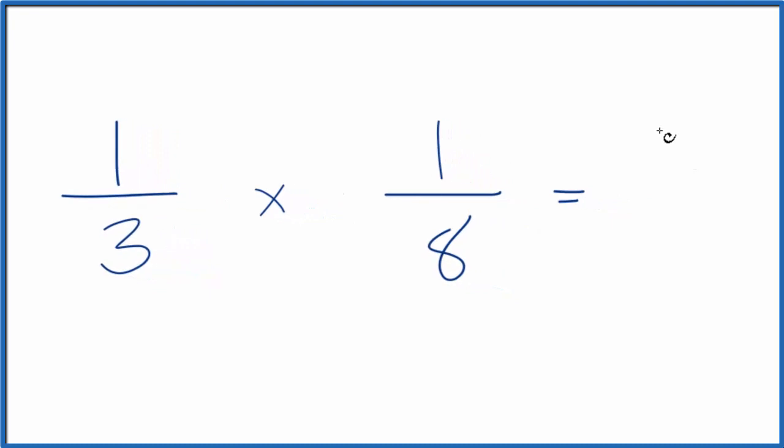1 times 1 is 1, and then 3 times 8, that's 24. So 1/3 of 1/8 is 1/24.